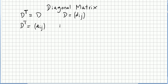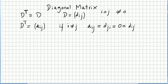If i is different from j, Aij will be equal to Dji. Why is that? Because all the entries will be zero, and this is even equal to Dij, because this is a diagonal matrix. So if i is equal to j, this number will be different from zero, and all the other entries where i is different from j will be zero, for both cases, because this is a diagonal matrix.